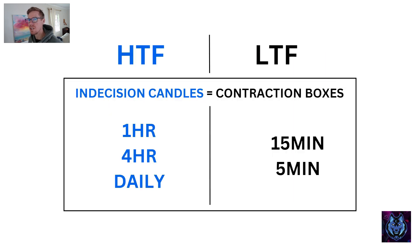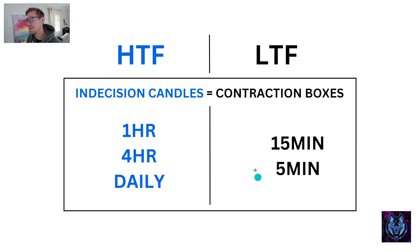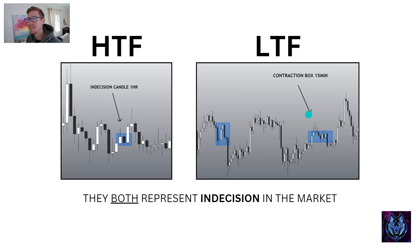Contraction boxes are actually indecision candles. The indecision candles appear on the higher time frame, and if we go into a lower time frame, that is where we find the contraction boxes. For instance, we use a higher time frame — daily, four hour, or one hour — indecision candle, and we go to a lower time frame, 15 or five minute, contraction box. These two time frames work exceptionally well together, and I'm going to be going through a strategy at the end using these time frames.